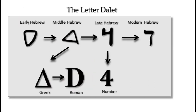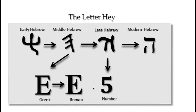We also have the Dal or Dalet. In the early Hebrew you can see it looks just like a door — even though it looks like a triangle, it represents a door. Then in the Paleo, it was adopted into the Greek to get the D, then the number four in the late Hebrew into the modern. We also have the Ah or Hey — representing a man with arms raised up to represent worship — then adopted through the middle or Paleo Hebrew, then late Hebrew, into the modern, which represents the letter E or number five, though it's pronounced as the Ah sound.